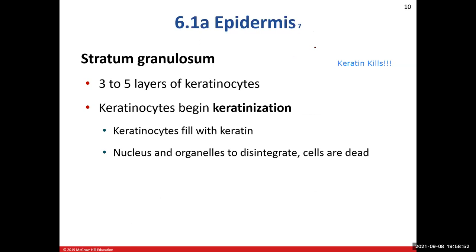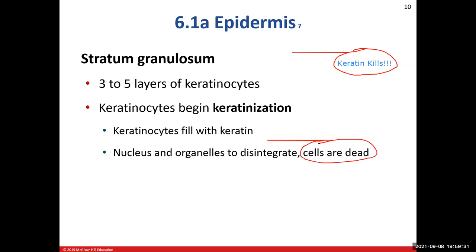The third layer is the stratum granulosum — not very thick, only three to five cell layers thick. This is where our cells start to kill themselves. They start filling up with keratin, which kills off the organelles — it's like destroying your own internal organs. The nucleus starts to disintegrate, and once all that happens, these cells are considered dead.